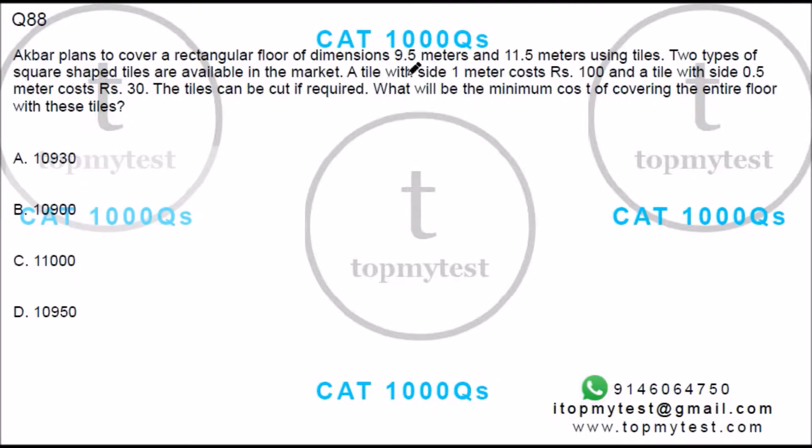Akbar plans to cover a rectangular floor of dimensions 9.5 and 11.5 meters using tiles. Two types of tiles are available, both are square shaped. One has a side of one meter and costs 100 rupees. Another is a tile of side 0.5 meters and costs 30 rupees.